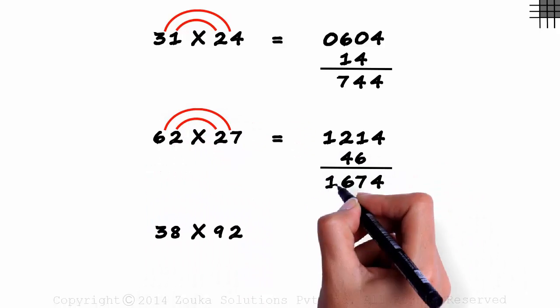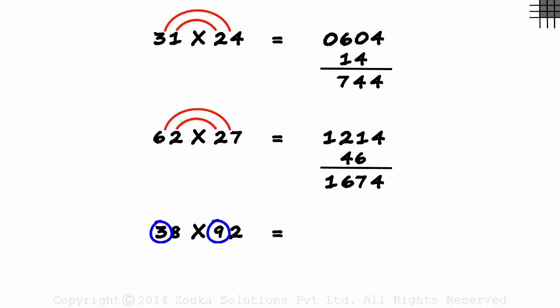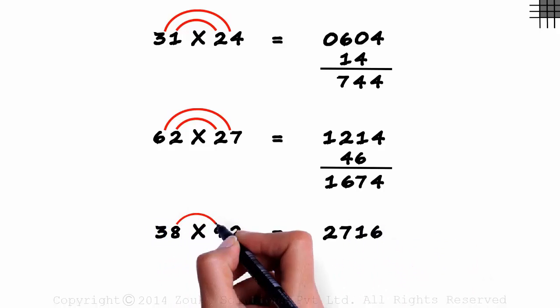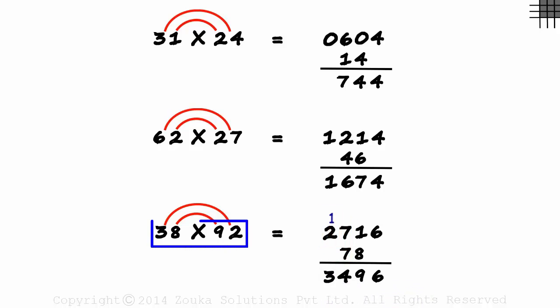1674 is the answer. The last one, 3 times 9 is 27, 8 times 2 is 16, and 72 plus 6 is 78. 6, 1 plus 8 is 9, 7 plus 7 is 14. We write a 4 and carry the 1 over. 1 plus 2 is 3. 38 times 92 is 3496.